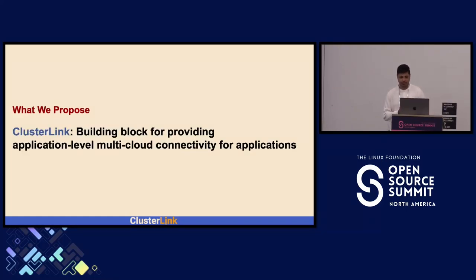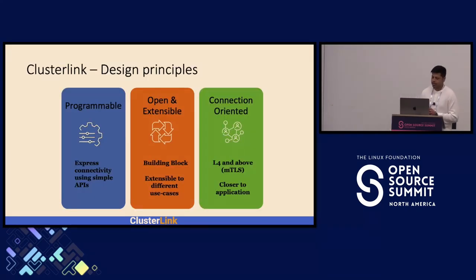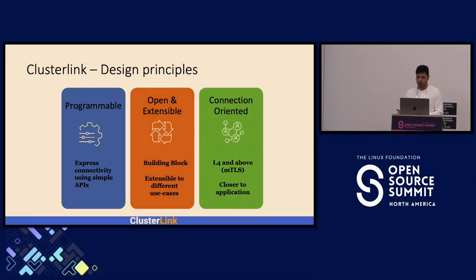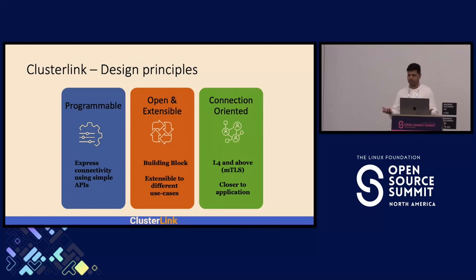Based on these requirements, we propose ClusterLink, designed as a building block for providing application-level connectivity between applications. ClusterLink is designed based on three principles: first, programmable, where developers can configure and express connectivity needs using simple APIs or Kubernetes objects; second, open and extensible, where ClusterLink is just a building block and not an end-to-end solution, and can be easily integrated into existing solutions needing multi-cloud or multi-cluster use cases; and finally, connection-oriented, where it doesn't do packet forwarding but works on connection-level attributes.